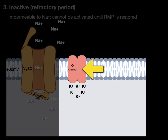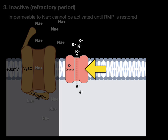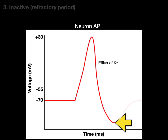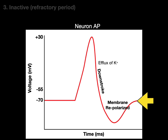To repolarize the membrane, voltage-gated potassium channels come into play. They open a little slower — around -30 to -40 millivolts — and when they do, there is an efflux of potassium: positively charged ions leaving the cell. This causes the membrane to repolarize back to -70 millivolts. The membrane actually hyperpolarizes slightly, but this downstroke is where the membrane repolarizes back to its original resting membrane potential.